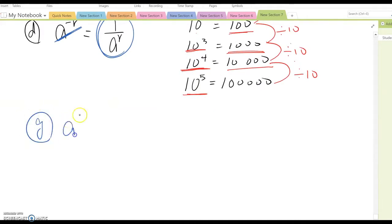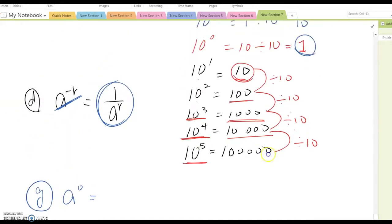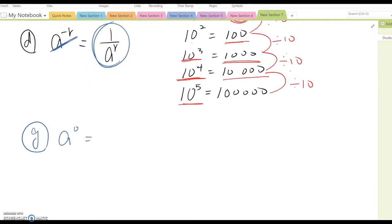And then it also reflects property G. G is A to the zero power. As you see, A to the zero power becomes one. Because it means A divided by A. So, it becomes one, basically.